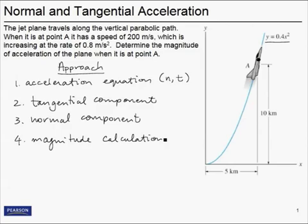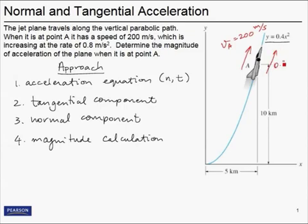Before we start step one, let me make sure you understand what's going on with the problem statement. The speed at point A is 200 meters per second, presumably in the direction of the nose of the aircraft — so V at A equals 200 meters per second. We also know that speed is increasing at a rate of 0.8 meters per second squared, in the same direction as the velocity. In step two we'll figure out what that 0.8 meters per second squared term really means.